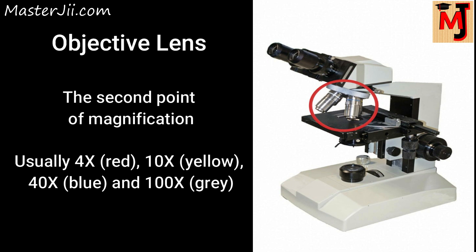The objective lens is the second point of magnification. They revolve around the nosepiece. There are usually four objective lenses of varying magnification, each with specific color lining: 4 times is red, 10 times is yellow, 40 times is blue,